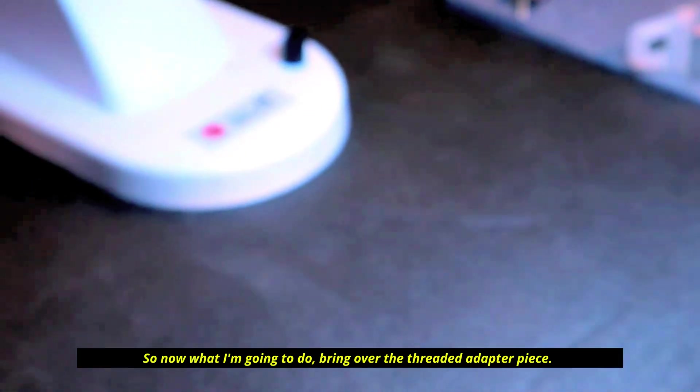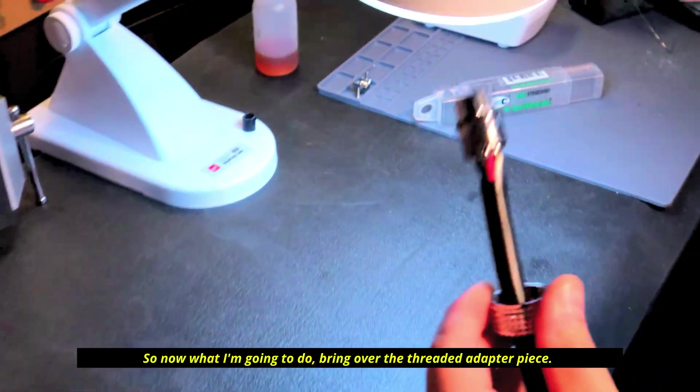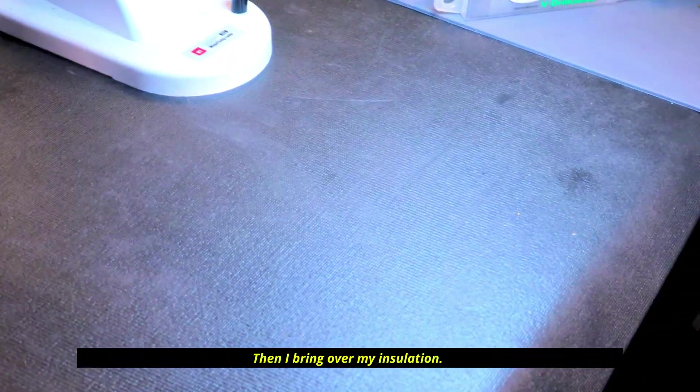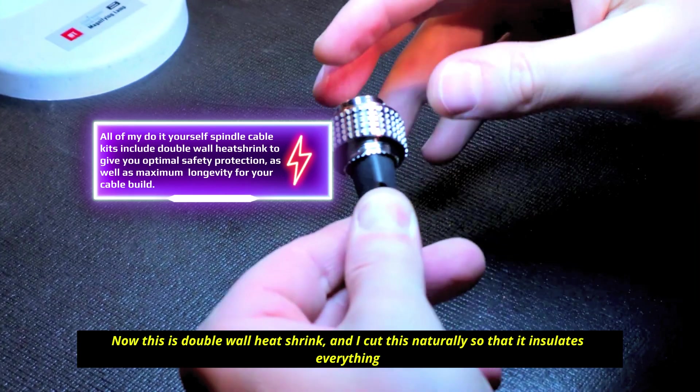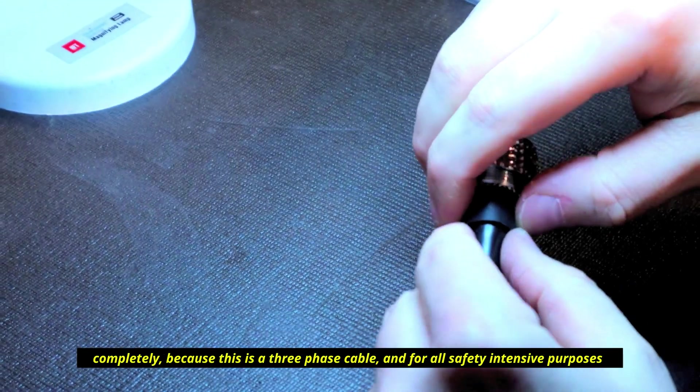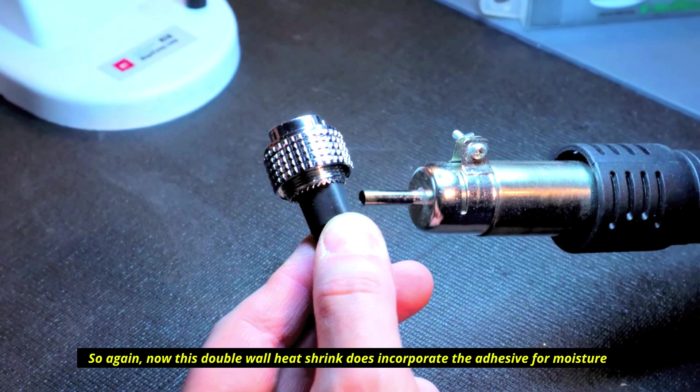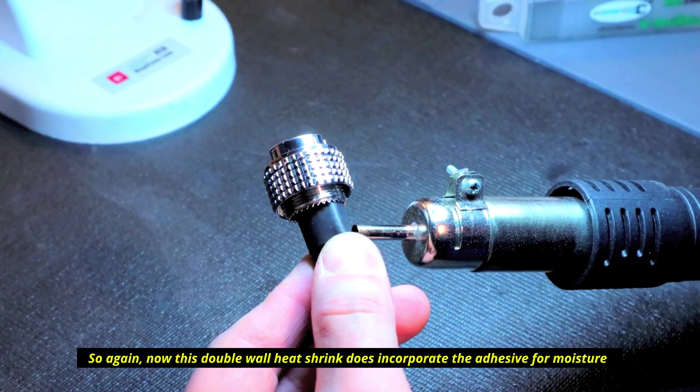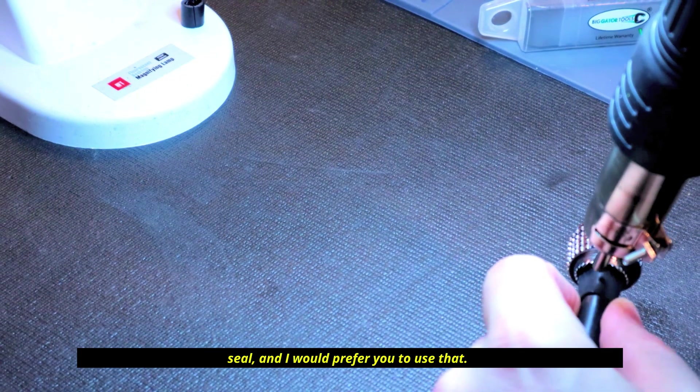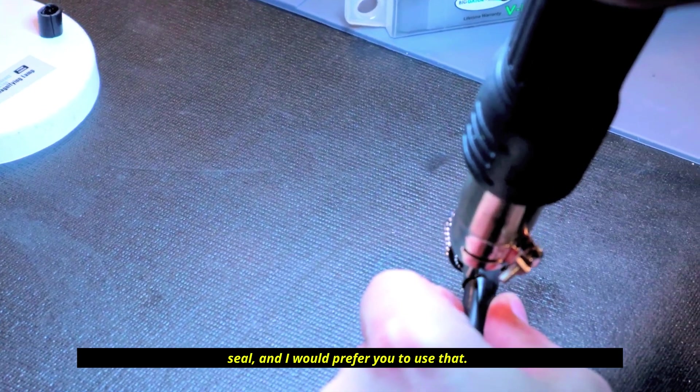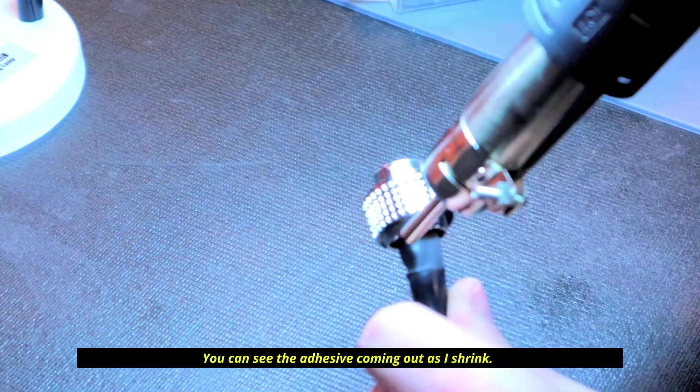Now what I'm going to do is bring over the threaded adapter piece. This comes up, then I bring over my insulation. This is double wall heat shrink and I cut this so that it insulates everything completely because this is a three-phase cable. For all safety intensive purposes, this must be done this way. This double wall heat shrink does incorporate the adhesive for moisture seal and I would prefer you to use that. You can see the adhesive coming out as I shrink.